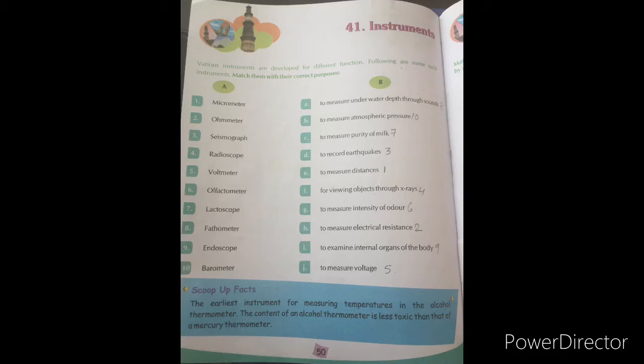Fourth, radioscope. What does radioscope do? It is used for viewing objects through x-rays. Point number F.